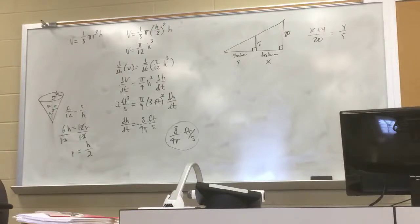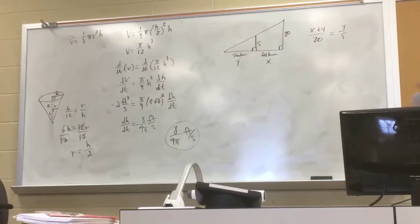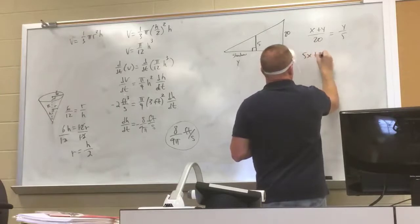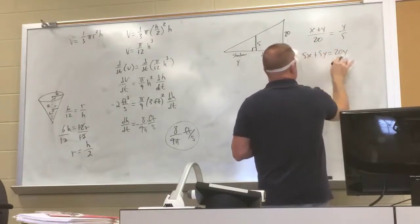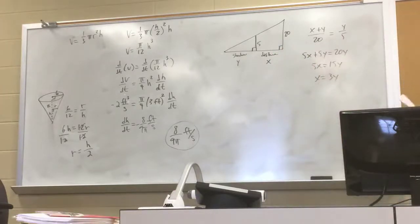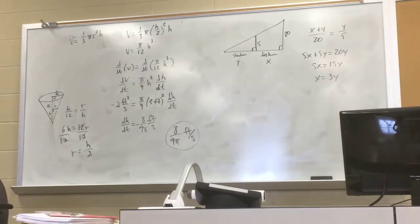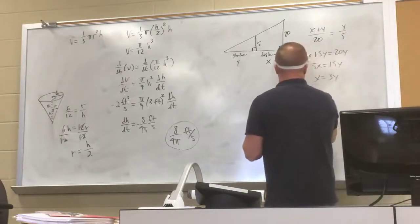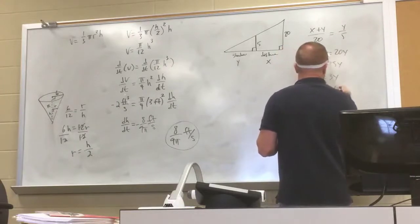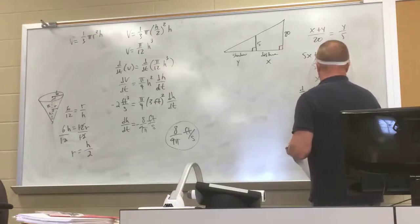Using similar triangles: (x + y)/20 = y/5. Cross-multiplying: 5x + 5y = 20y, so 5x = 15y, giving x = 3y. Taking the derivative with respect to time: dx/dt = 3 · (dy/dt).